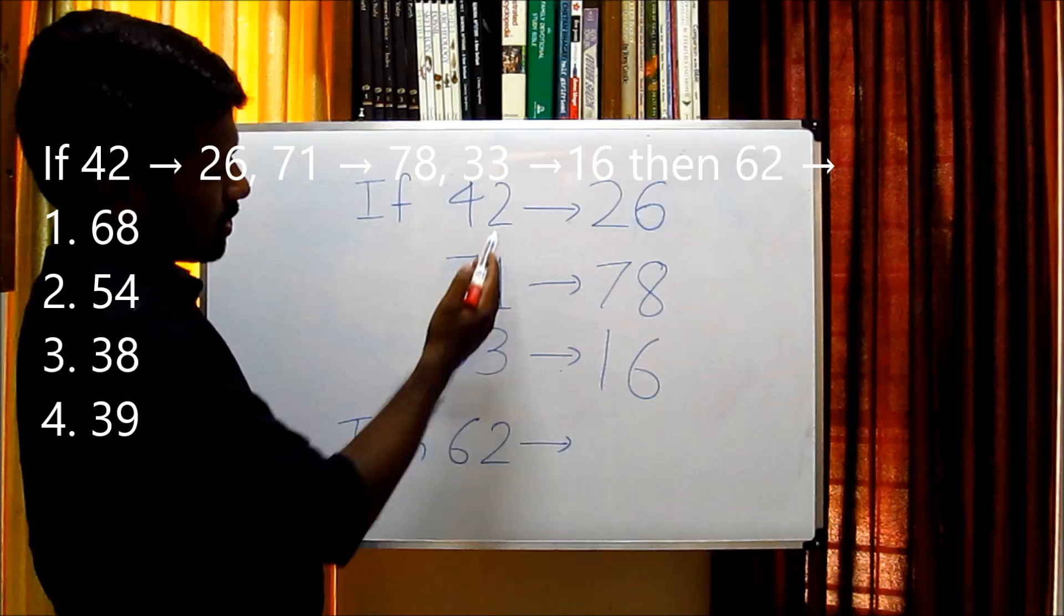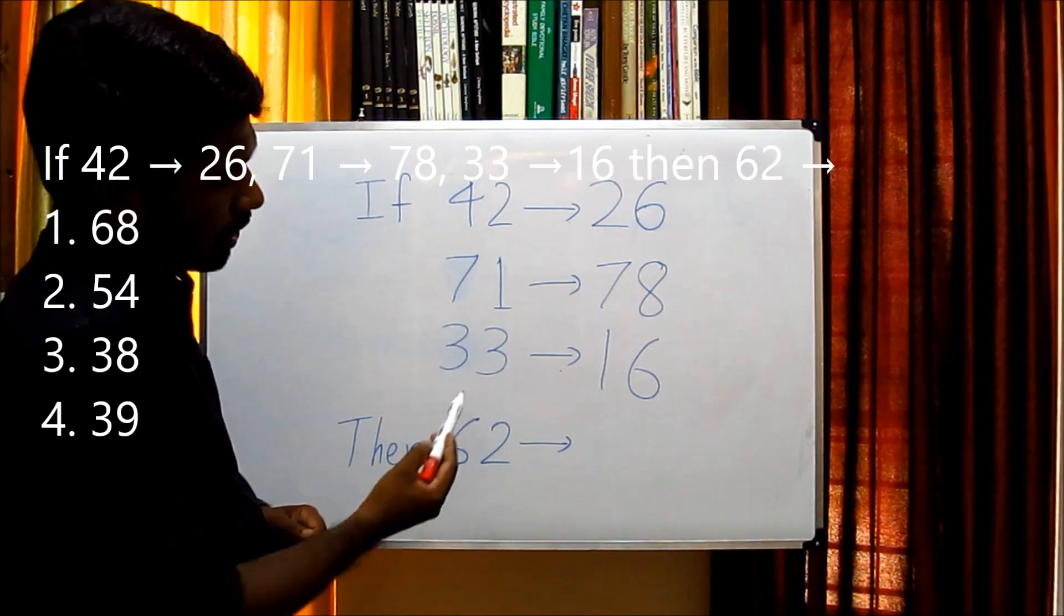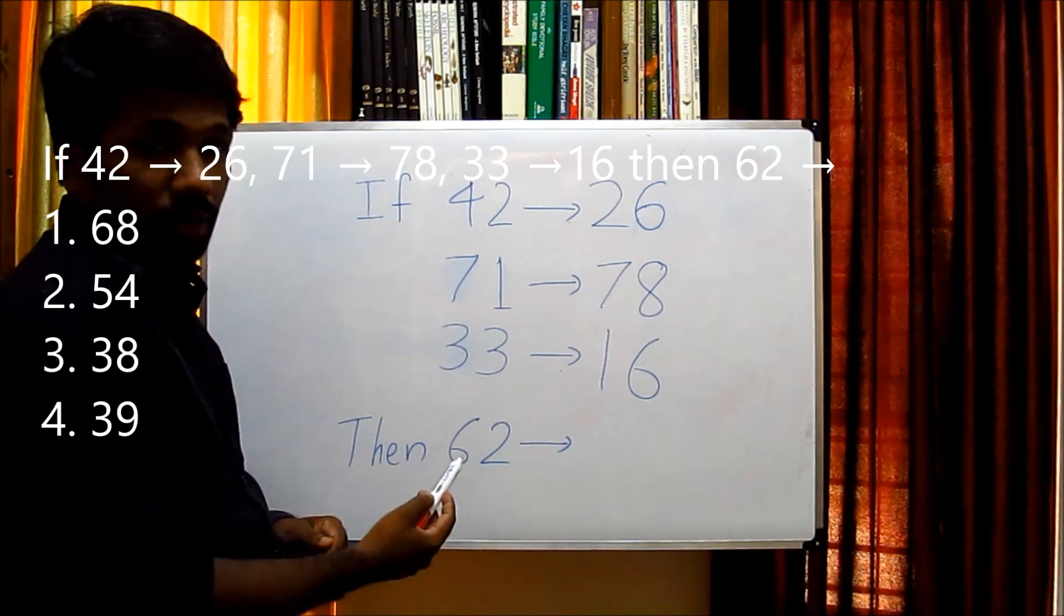If 42 gives 26, 71 gives 78, 33 gives 16, then what will be 62?